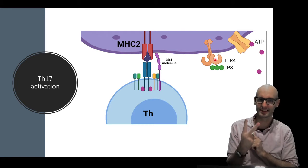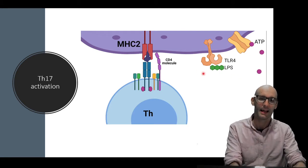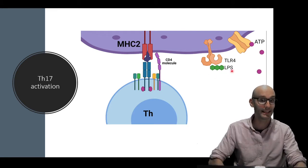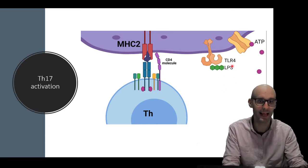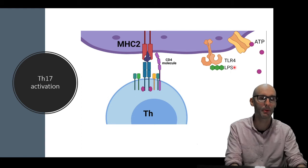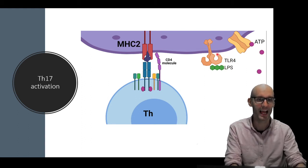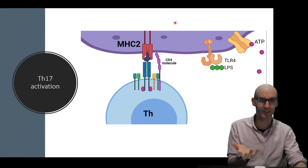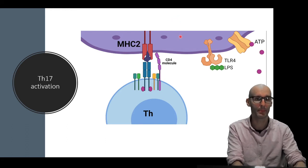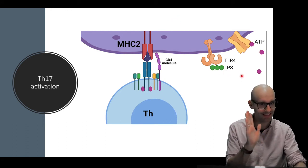Typically, we need two signals. And these two signals could be TLR activation, for example, and so this could be LPS right here, lipopolysaccharide from a gram-negative bacteria, activating the TLR receptor, which will cause a phosphorylation cascade and activation of a transcription factor called NF-kappa B. But we also need a second signal here.